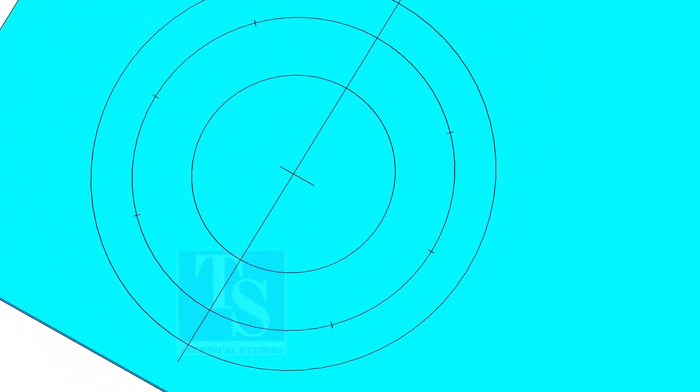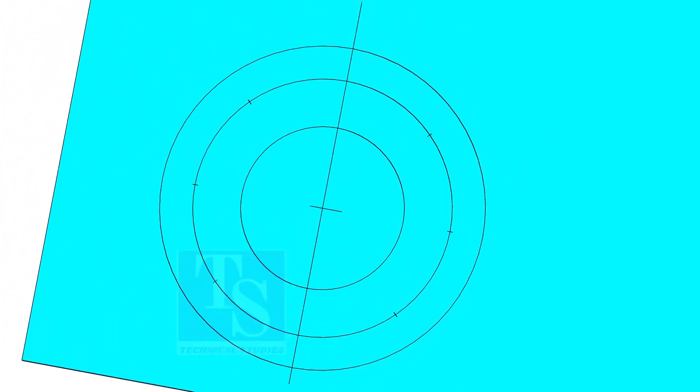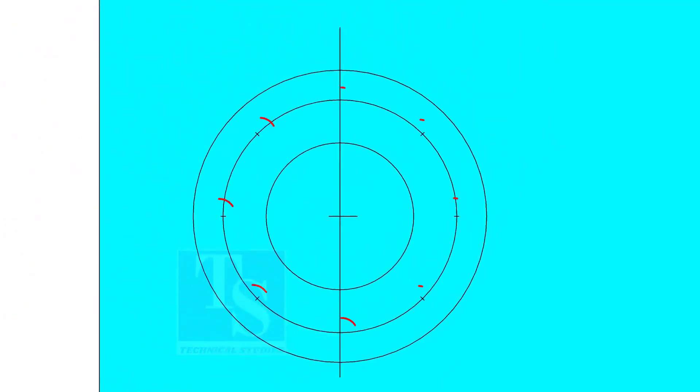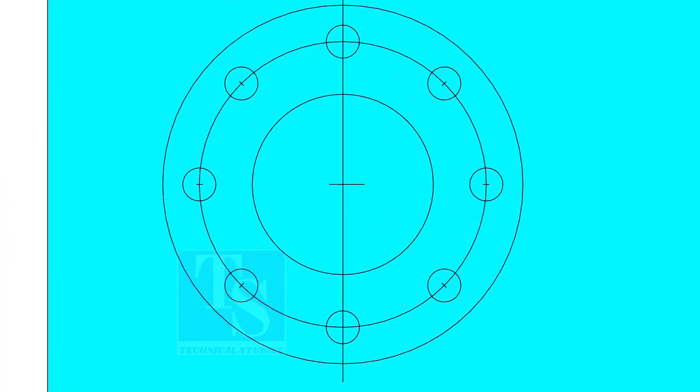Punch mark all the 8 divisions and draw circles of the diameter of the bolt holes if you are drilling the holes with a normal drill bit.